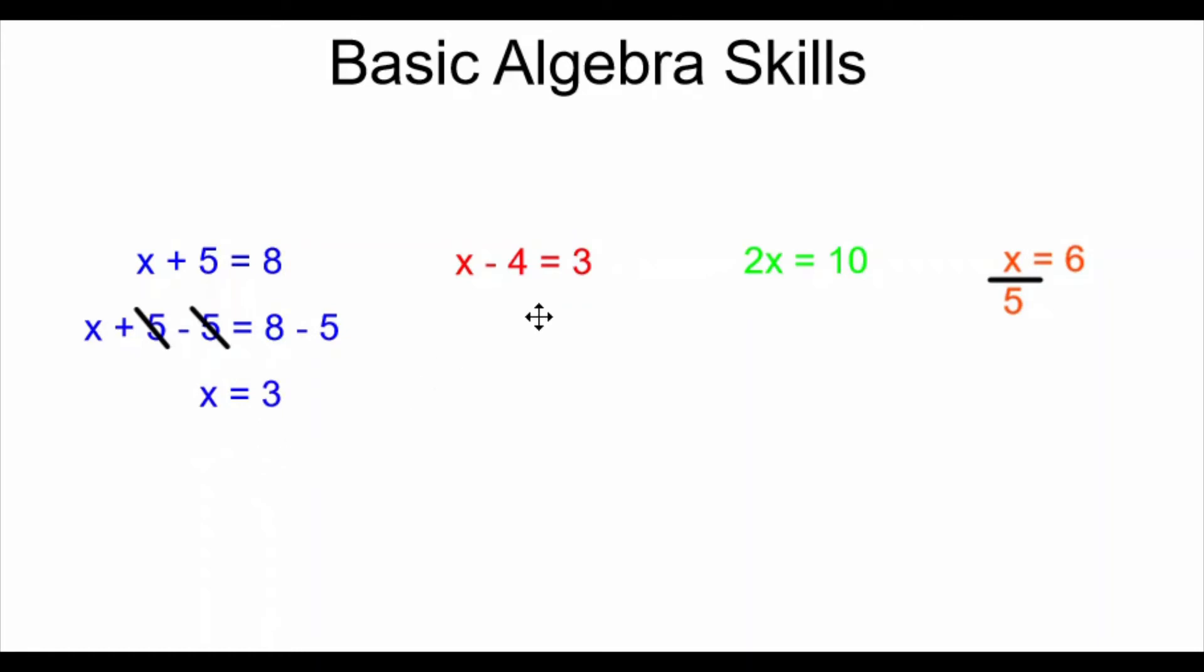In the second example, my x is having a 4 subtracted from it. So I do the opposite. I add a 4 to both sides. These 4s cancel. My x is isolated. And 3 plus 4 is equal to 7. So I have x equals 7. I have my answer.